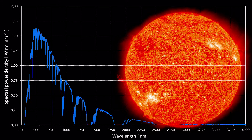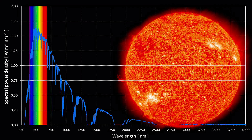Some of this light is absorbed by our atmosphere. This causes the spectral irradiance on the surface of the earth in watts per square meter to look like this. The intensity of the emitted light is highest between 400 nm and 700 nm, which happens to be the visible spectrum, ranging from violet and blue light at 400 nm to red light at 700 nm.